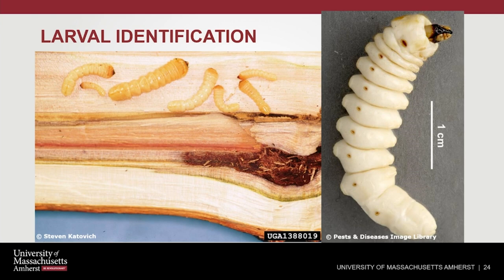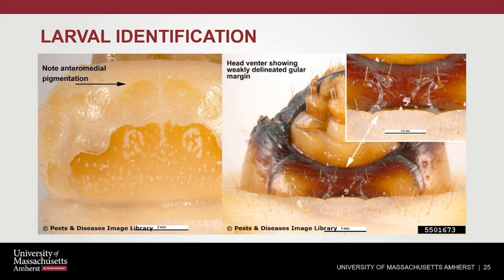Larval identification is quite a bit more difficult and I would leave this up to the experts. I wouldn't try to confirm an ALB larva yourself, but if you are cutting up firewood or working with hazard tree removal and you find some suspicious damage and you crack open a maple and find large cerambycid larvae, that might be something to report — especially if it's a maple. Entomologists will be looking at characteristics on the thoracic section of the Asian Longhorned Beetle larva and around the mouthparts. This is not a situation where you want to be figuring this out yourself.